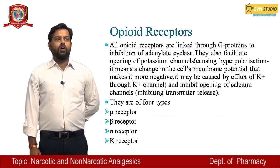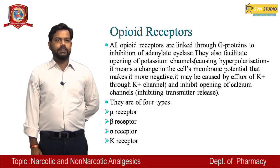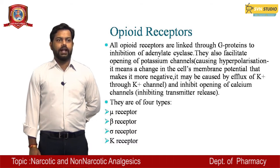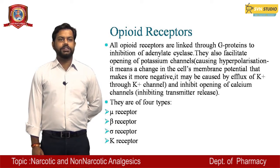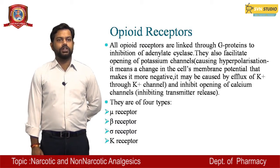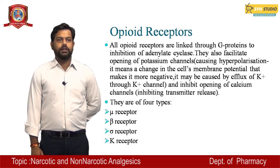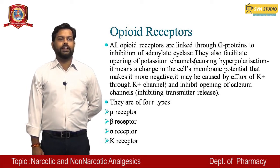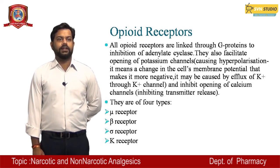Opioid receptors are linked through G-proteins to inhibition of adenylate cyclase. They also facilitate the opening of potassium channels, causing hyperpolarization. Hyperpolarization means a change in the cell membrane's potential that makes it more negative, generally caused by efflux of potassium or calcium through their respective channels. They also inhibit opening of calcium channels by inhibiting transmitter release.